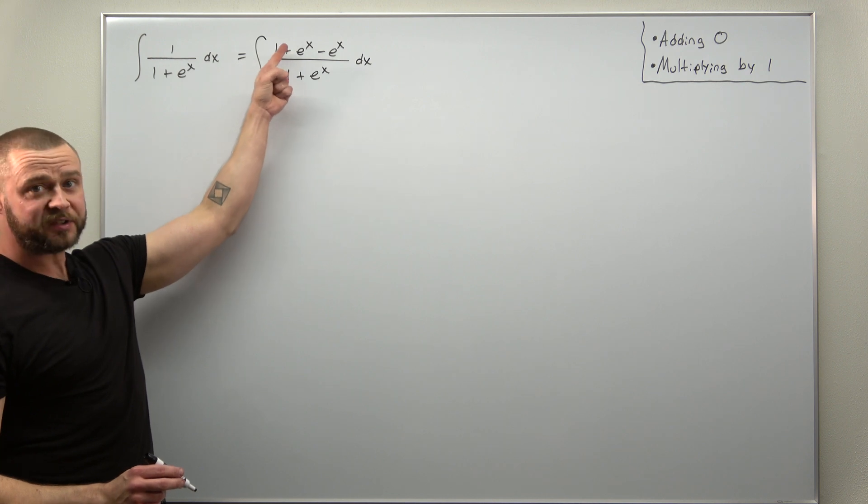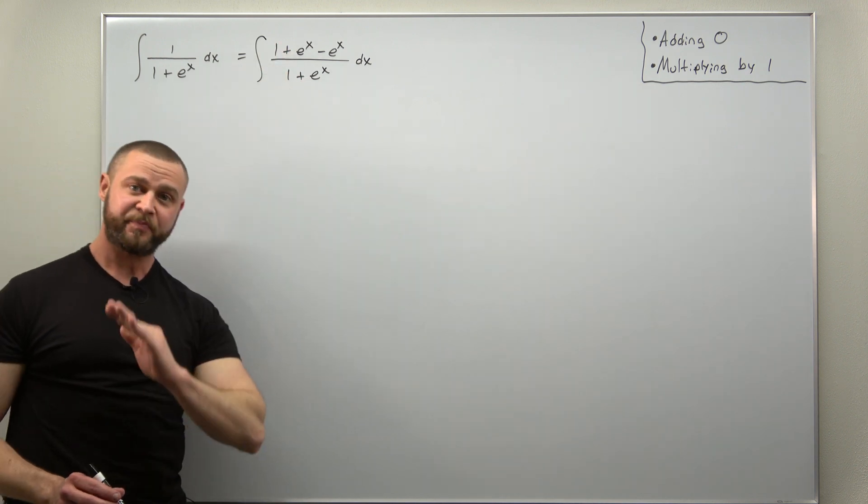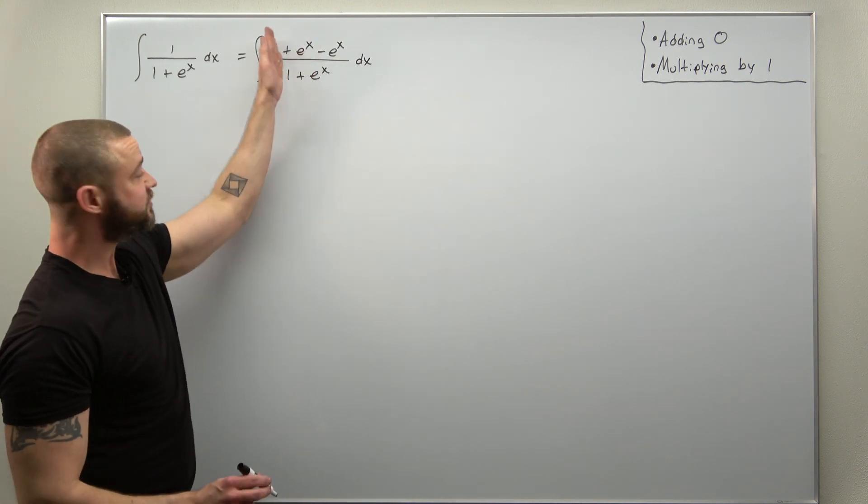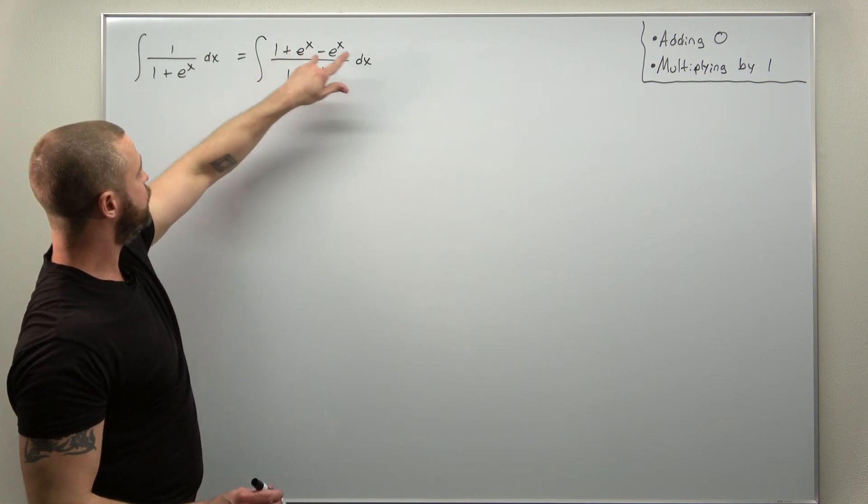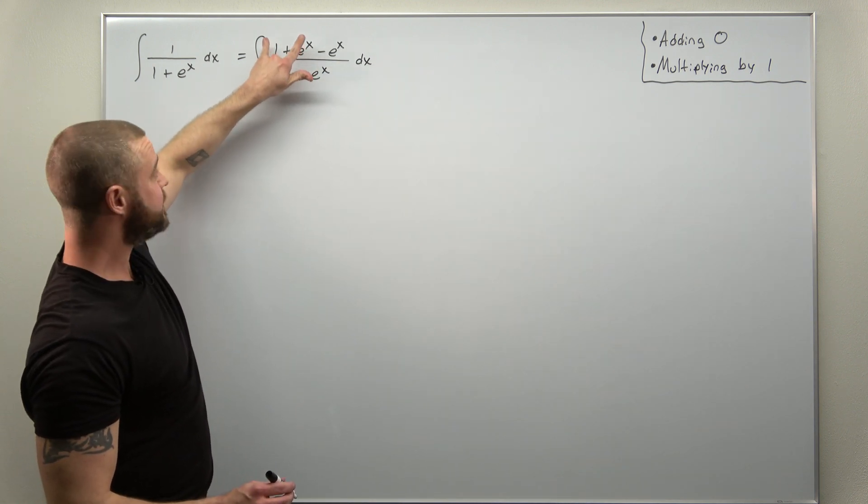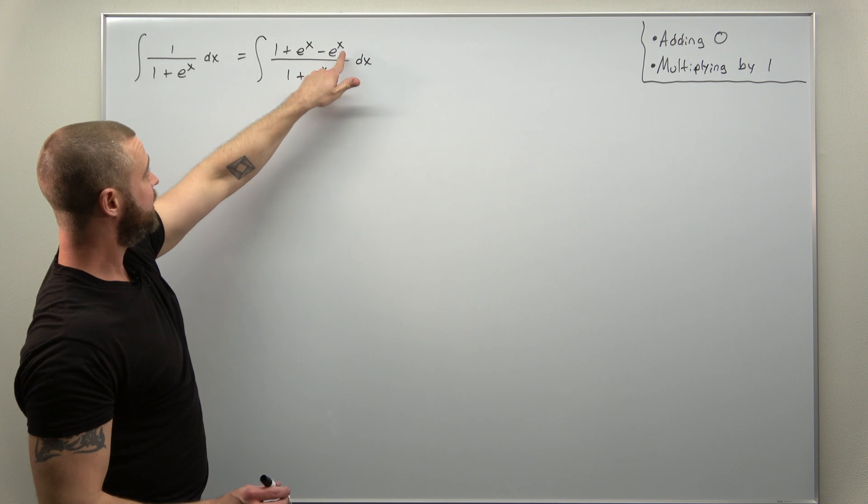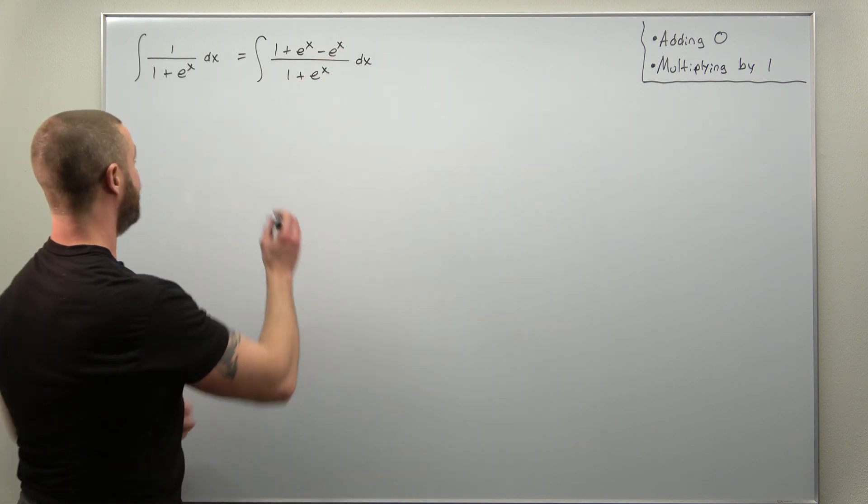We're going to have 1 plus e to the x divided by itself which will cancel out. So let's split that numerator into two parts: 1 plus e to the x over your denominator and then minus e to the x over that denominator.